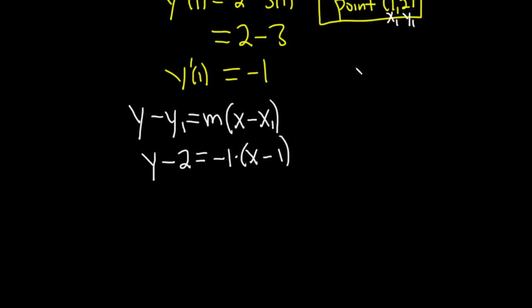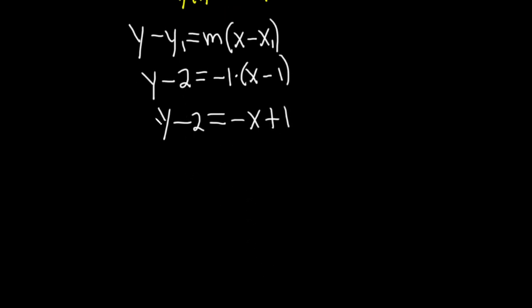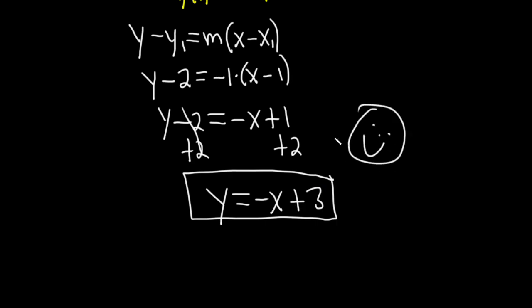And usually people solve for y, so let's go ahead and do that. So this is y minus 2 equals negative 1 times x is negative x. Negative 1 times negative 1 is positive 1. Then we can add 2 to both sides, so plus 2 plus 2. So we get y equals negative x plus 3. And that would be the equation of the tangent line. I hope this video has been helpful to someone. Good luck.